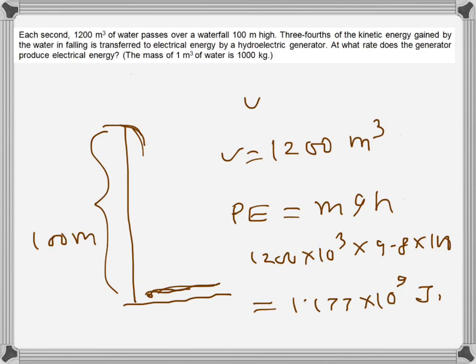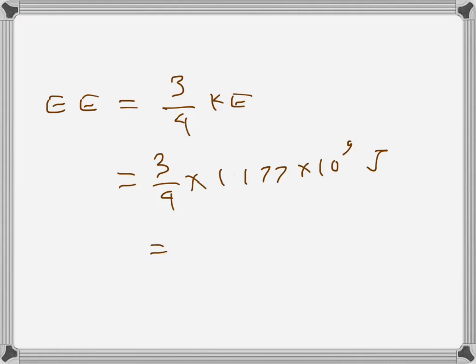Now three-fourth of that kinetic energy is converted to electrical energy. So this will be equal to the kinetic energy but three-fourth of that is converted into electrical energy. So if we say EE, that will be three-fourth of this one which is PE as well as KE. So that's three-fourth times 1.177 into 10 to the power 9 joules which comes down to 8.826 into 10 to the power 8 joules.